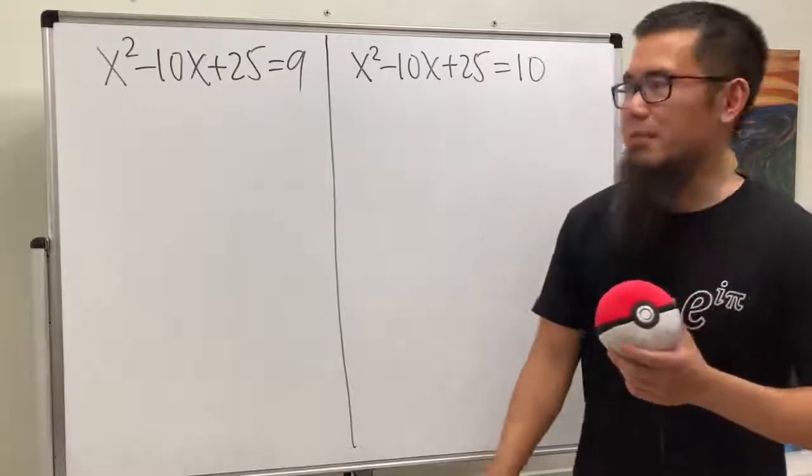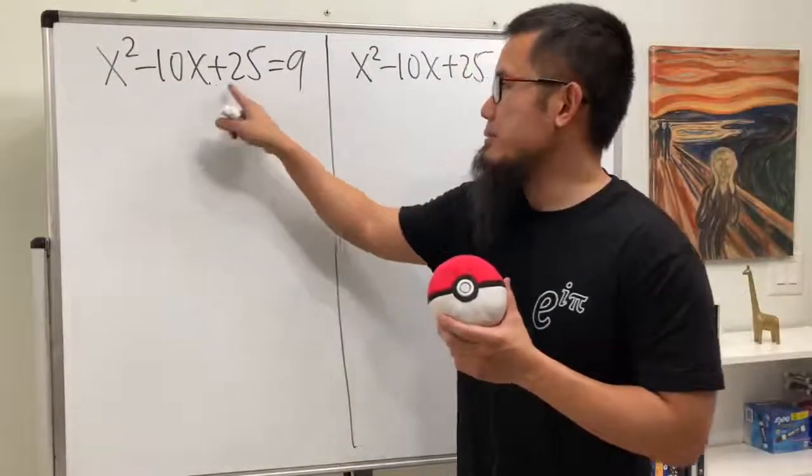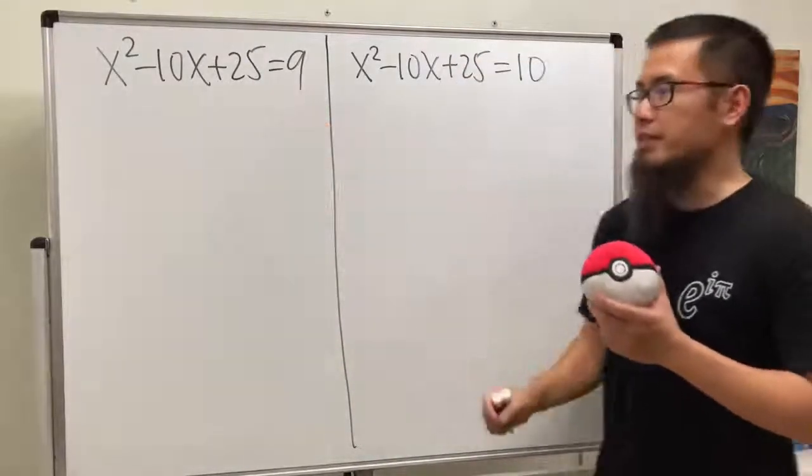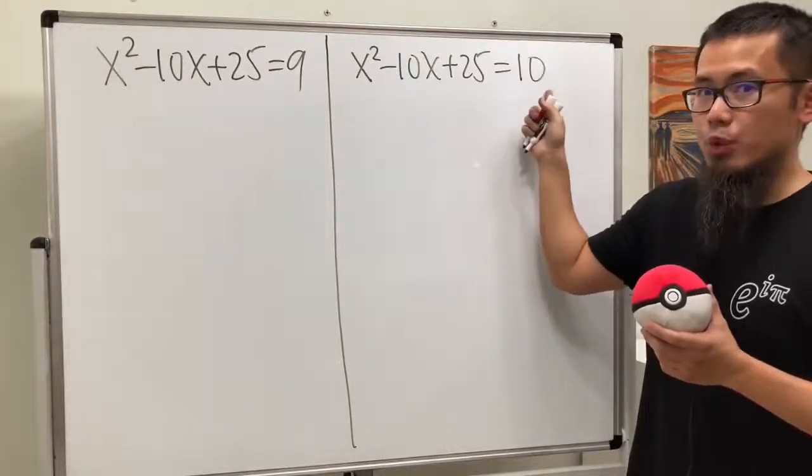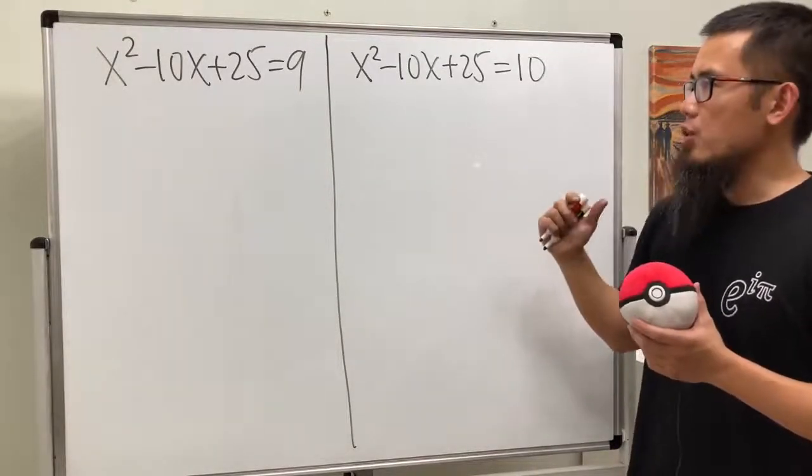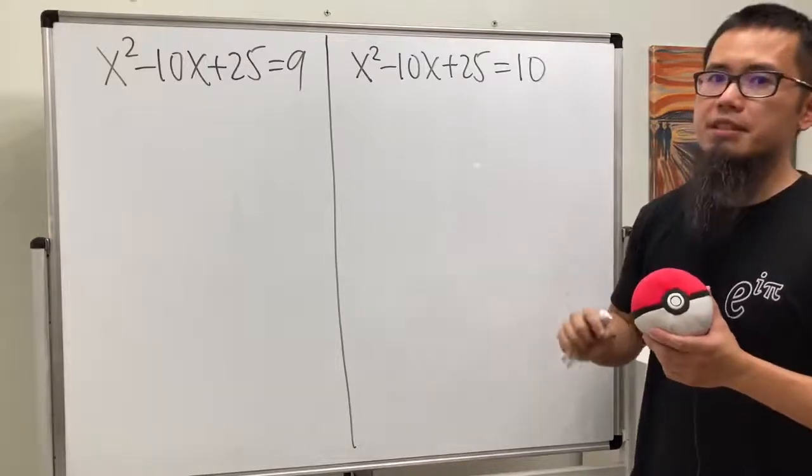Okay, two quadratic equations on the spot. The first one, x squared minus 10x plus 25, that's equal to 9. And for the second one, same thing right here, but it's equal to 10. So, which one is actually easier, though?